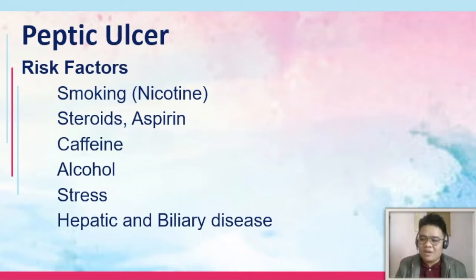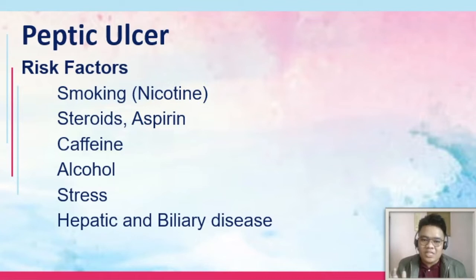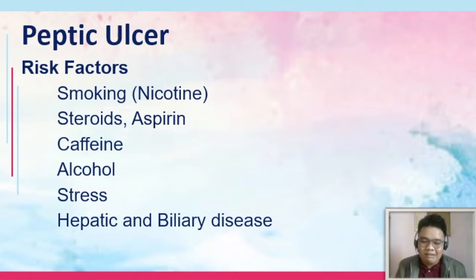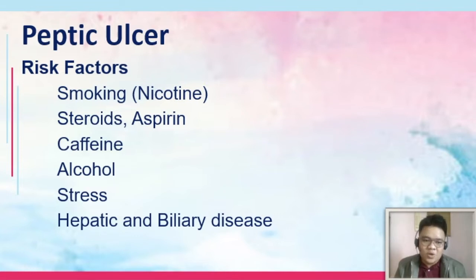Hepatic and biliary disease is also a risk factor. With hepatic and biliary disease, you will have bile acid. If there is inhibition of pancreatic bicarbonate secretion — meaning the basic substance is decreased and the acidic substance is increased — there is a possibility that the stomach lining would be destroyed.